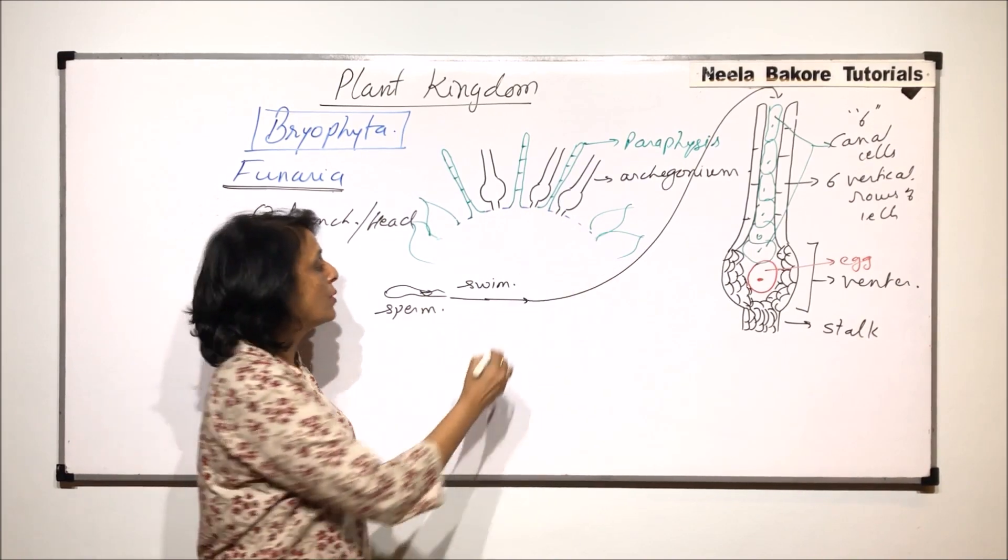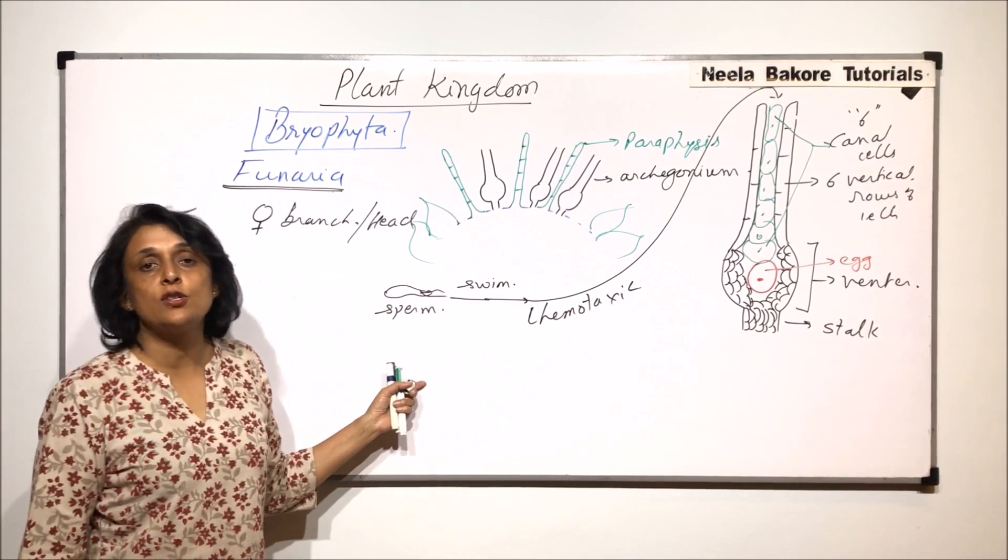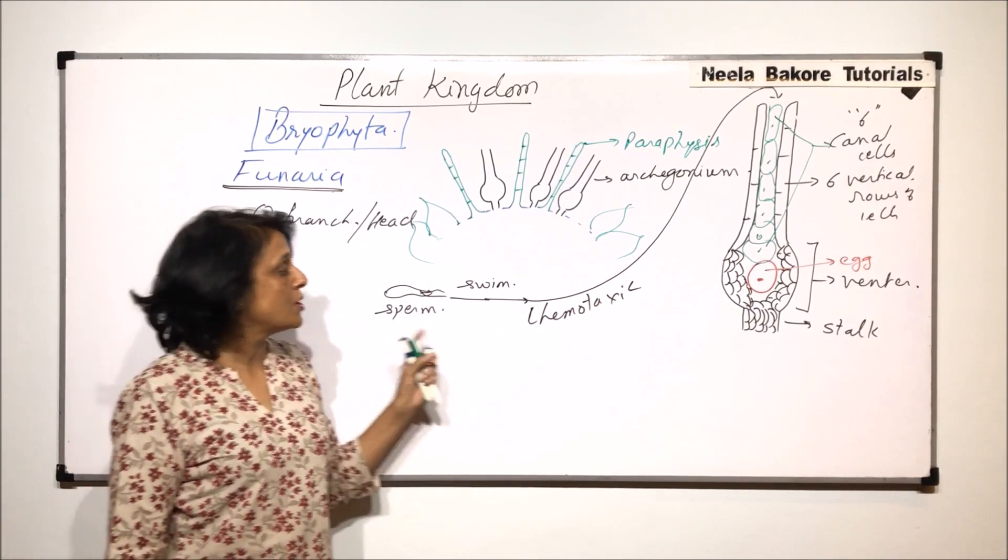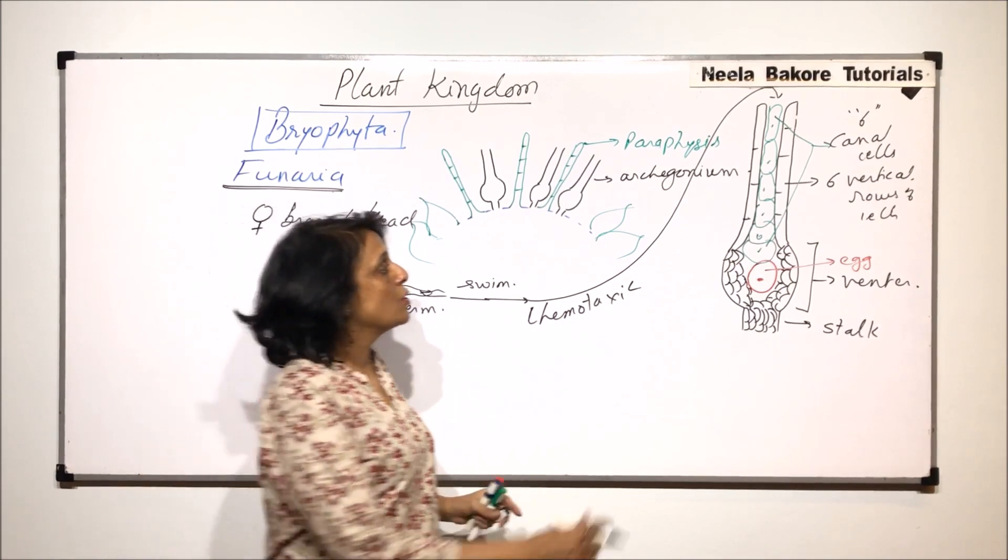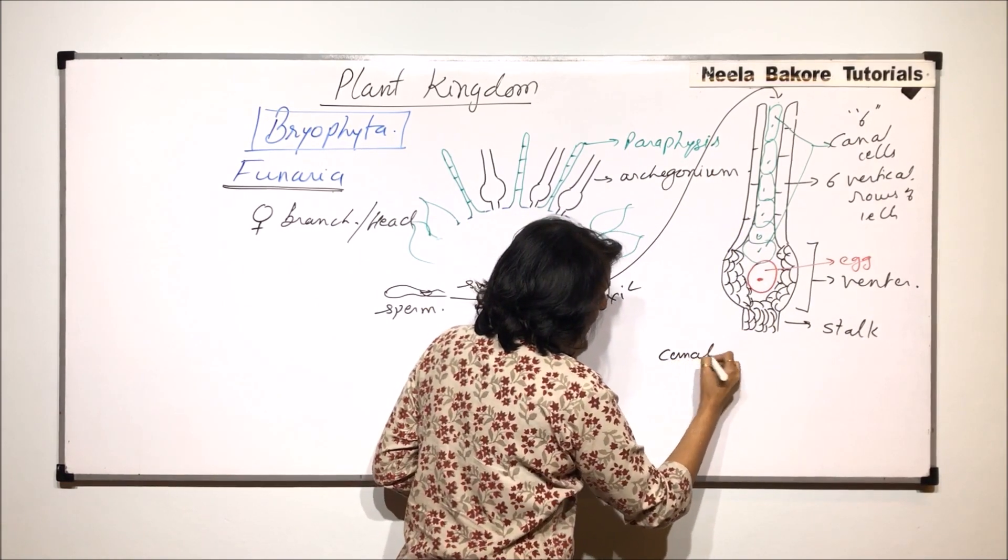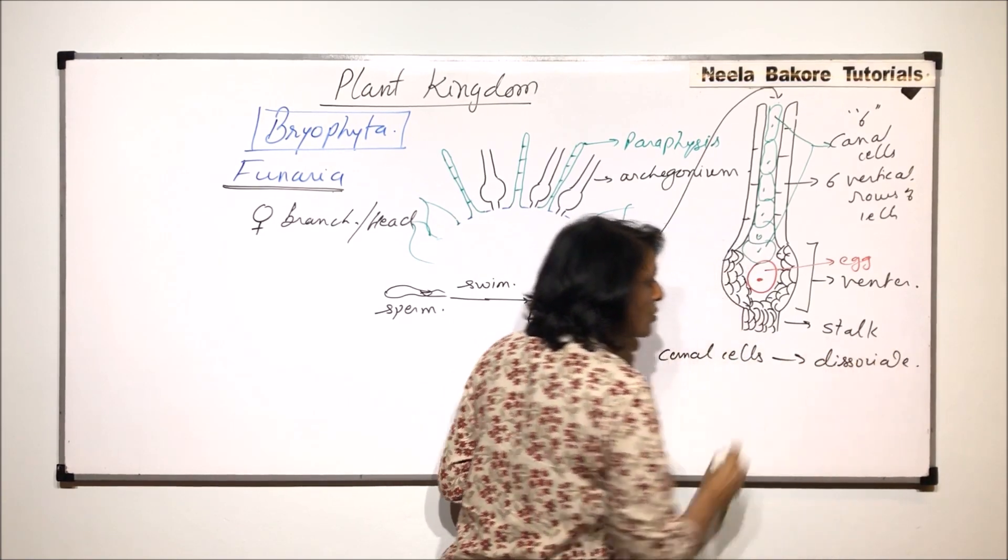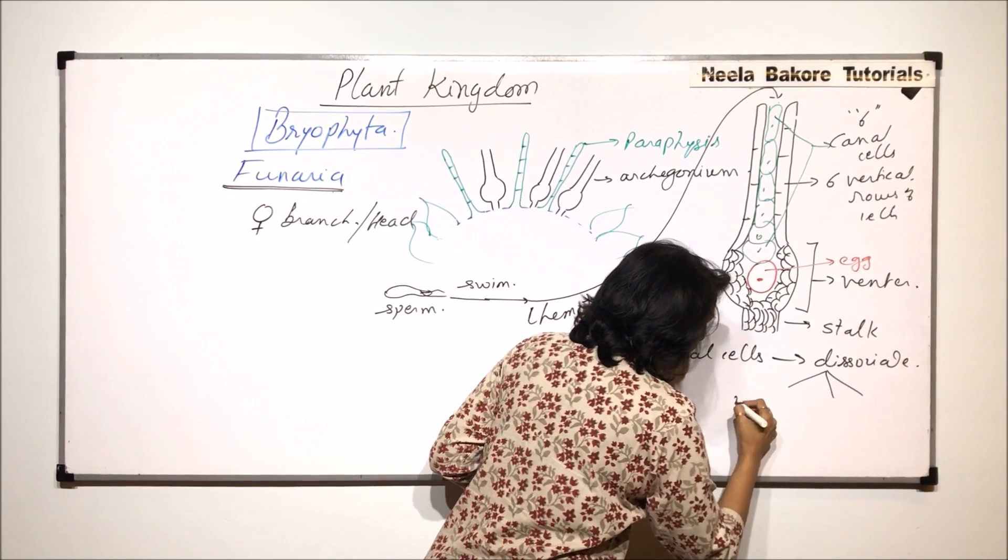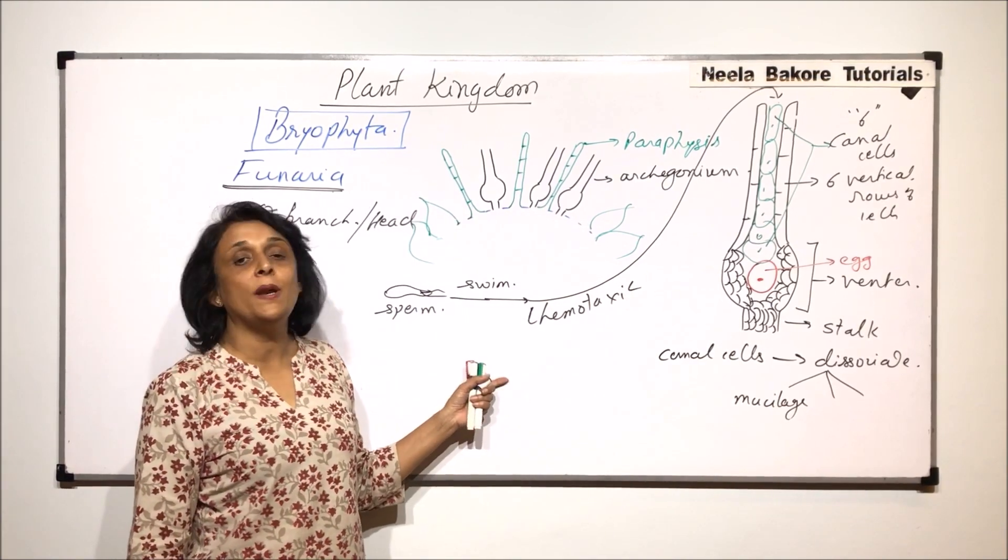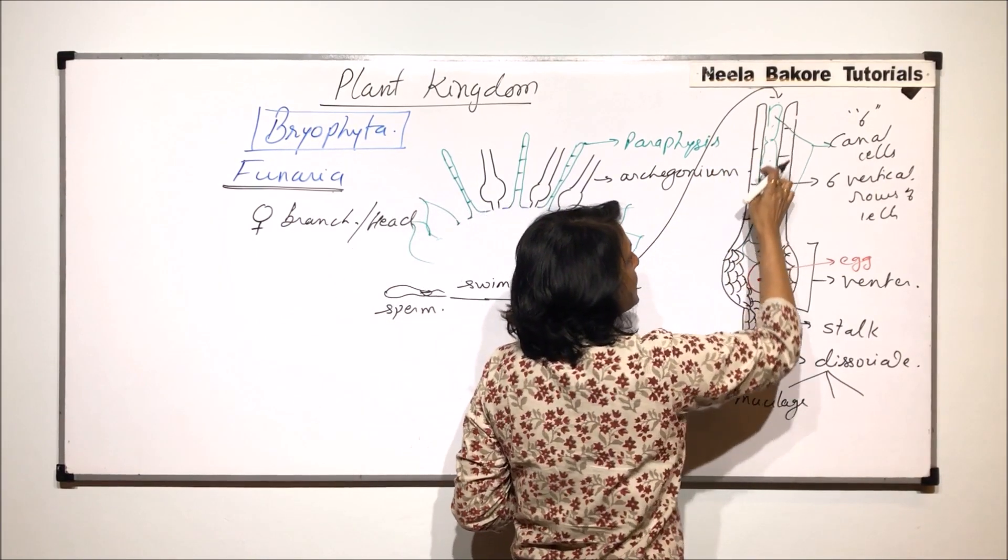This movement is known as chemotactic movement. Chemotactic movement is always because of chemicals. That means there are certain chemicals which would attract these sperms. So from where are these chemicals coming? So what happens is when the sperm reaches here, the canal cells, they dissociate. And when they dissociate, they release three things. They release mucilage.